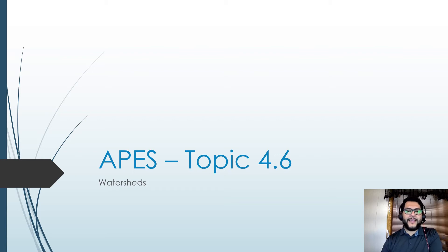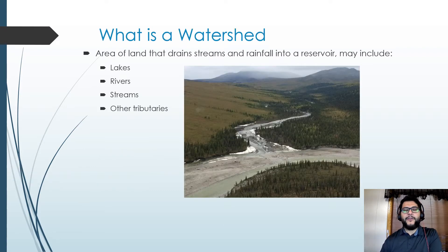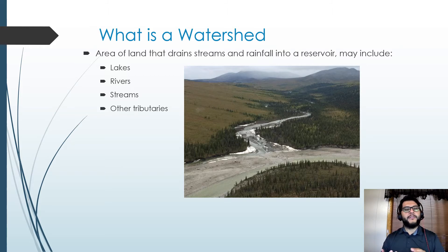Hey guys, this is Mr. V and this is an APES review video, topic 4.6: the watersheds. So very quickly, what is a watershed? It's basically a piece of land that has streams and rivers draining towards a reservoir. This can include not just rivers but lakes, streams, and other tributaries as well, but it all ends up draining down in one direction.